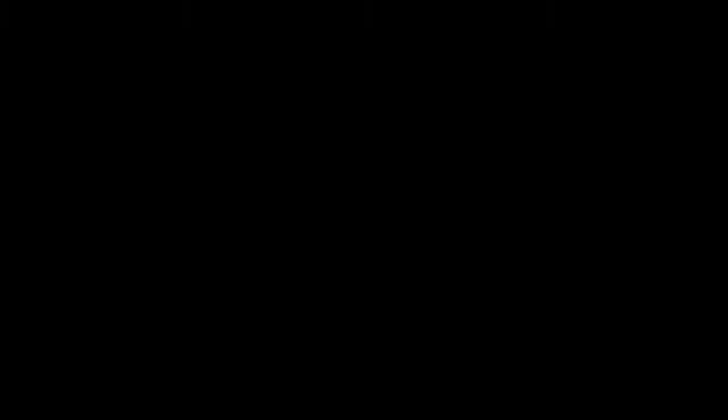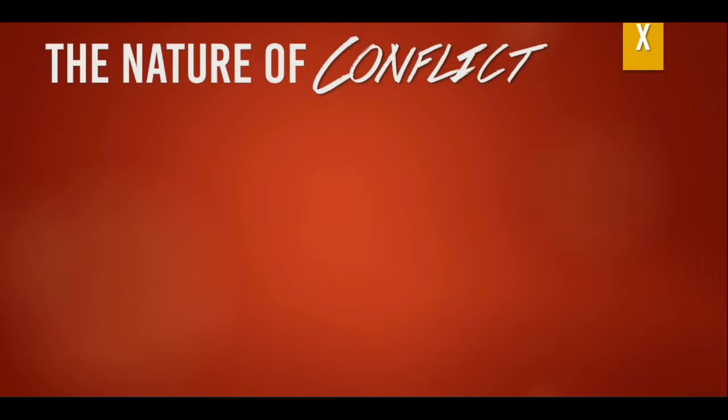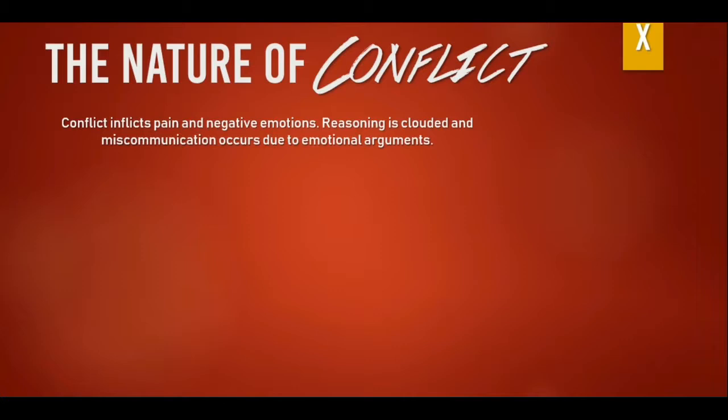Conflict causes pain and negativity. Reasoning oftentimes is clouded or unclear, and miscommunication happens due to emotional outbursts. This is the cycle of retaliation. Retaliation basically means revenge. We first perceive someone as a threat, go straight with our anger in actions, and this repeats over and over again with the other party.